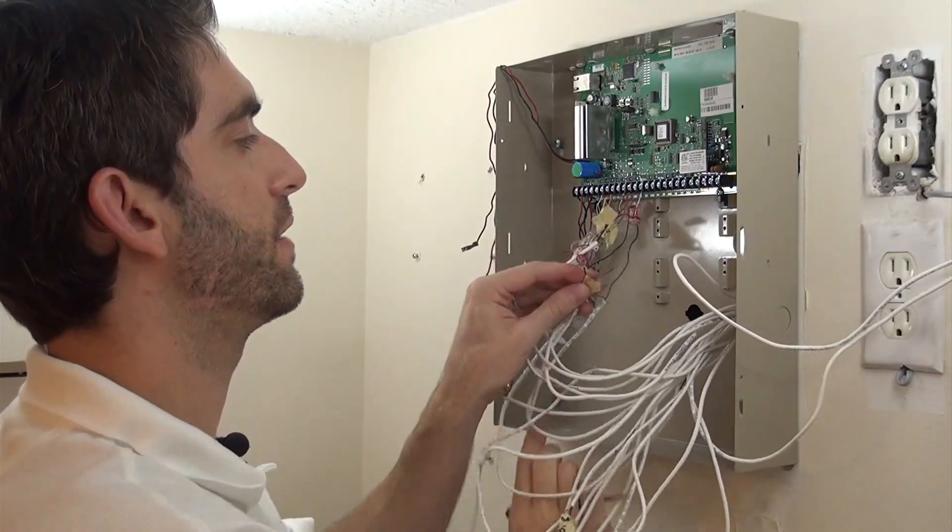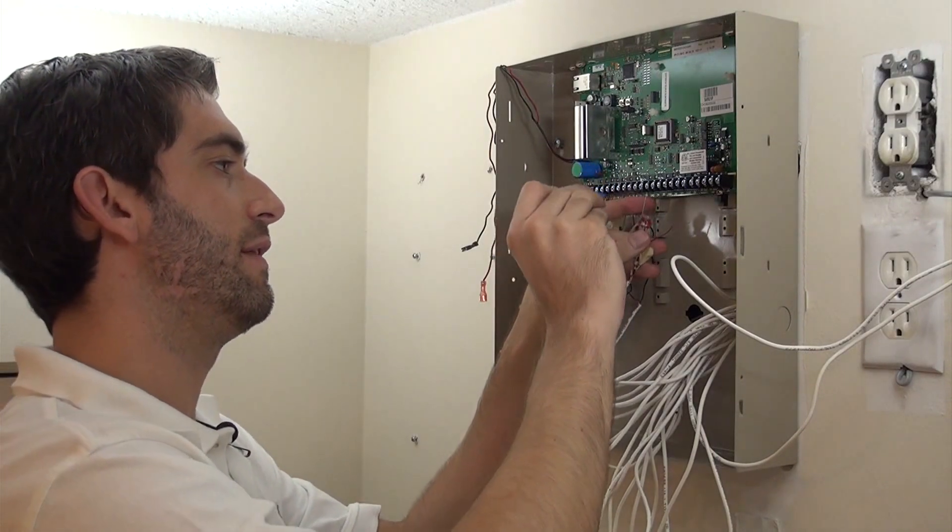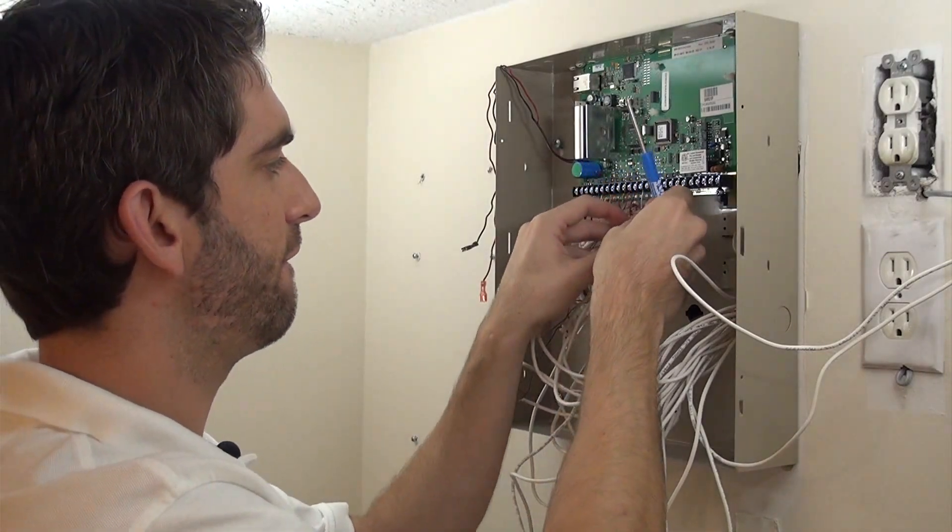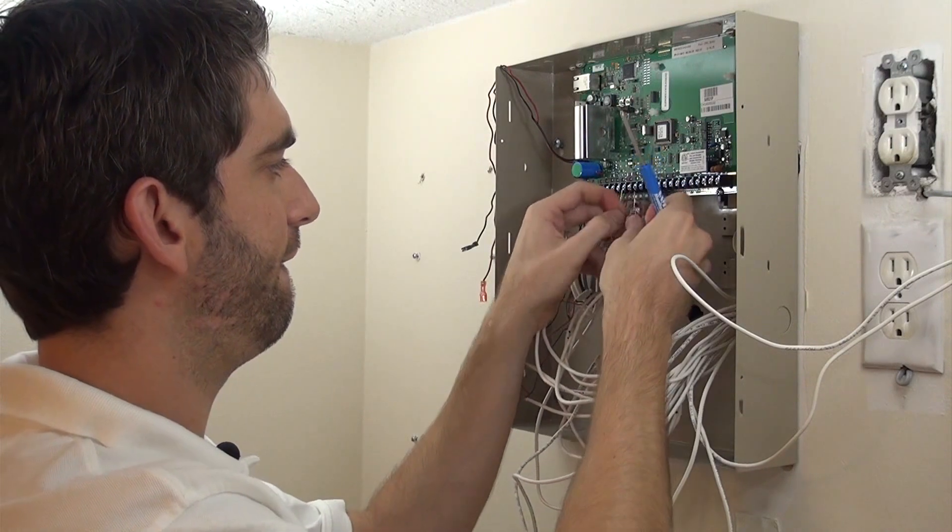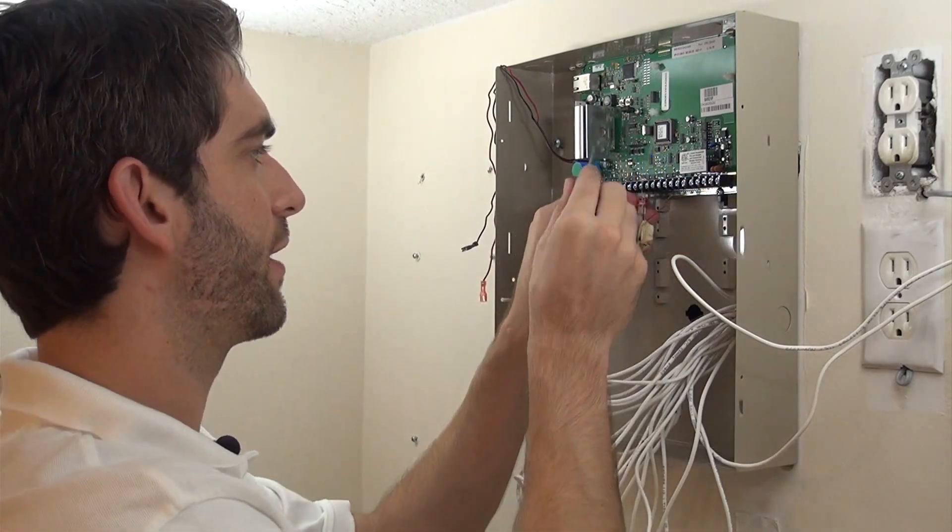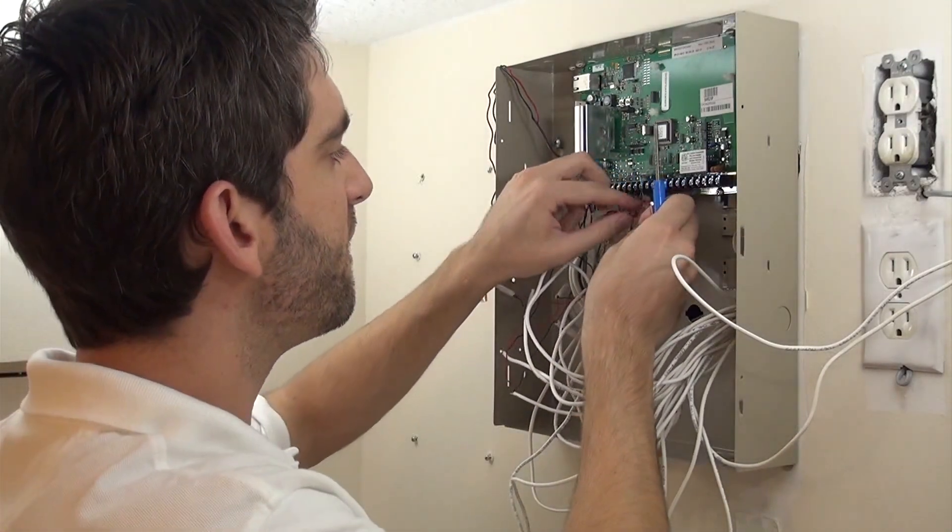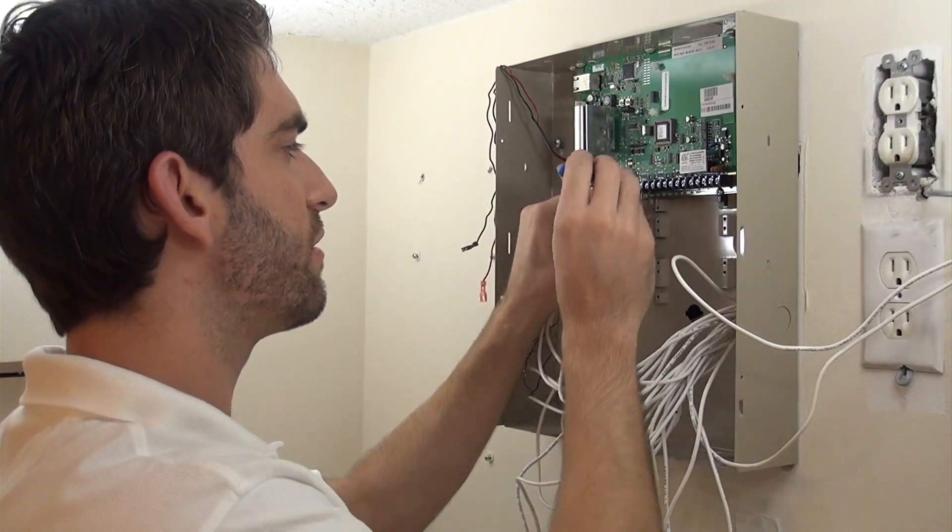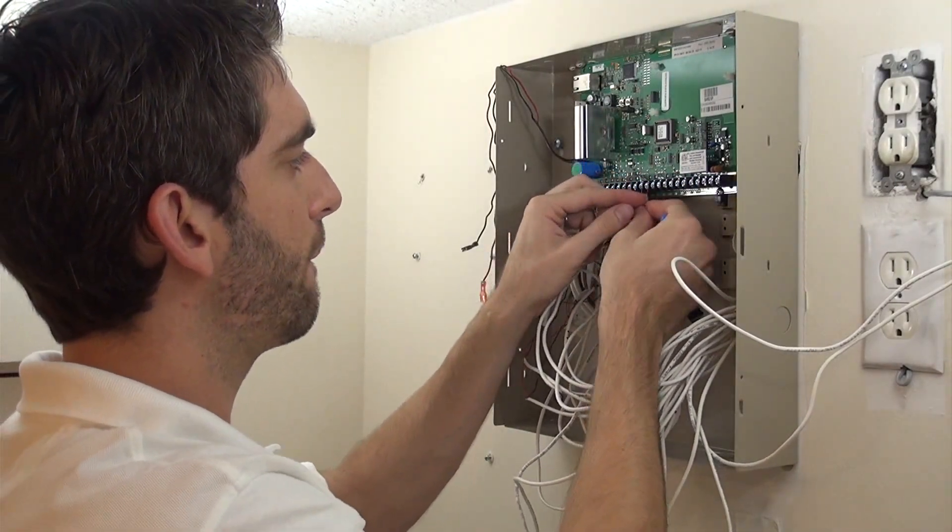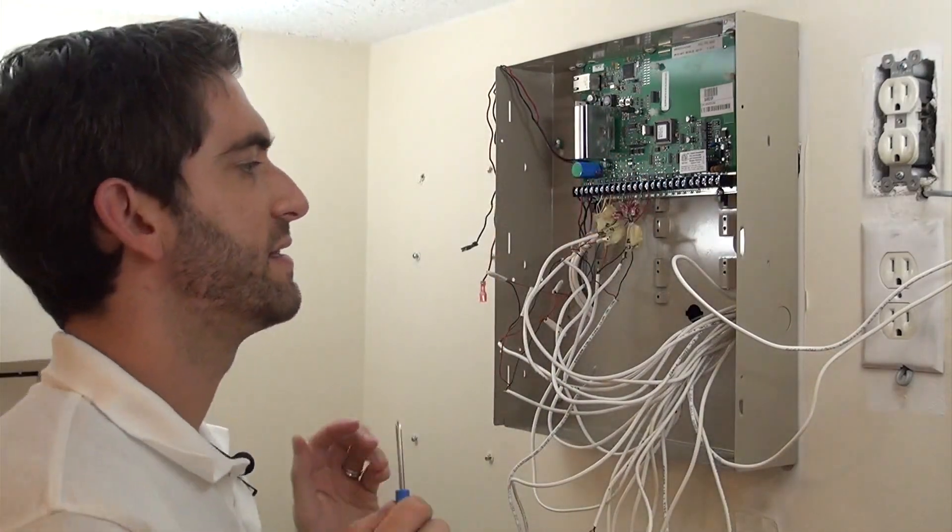And we're going to land this to zone 4. Feed it up and under, and since zone 4 is a shared common with zone 3, we're going to use the same terminal that we have zone 3 connected on. Feed the wire up and in. There we go, we've got both our commons for zone 3 and zone 4. And then we're landing zone 4 to the screw terminal labeled Z4. Nice and tight, good to go.